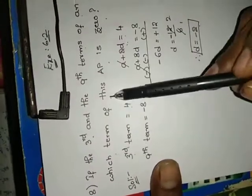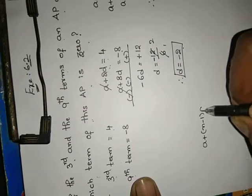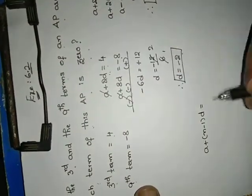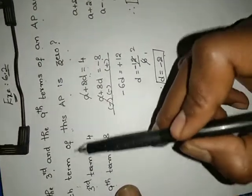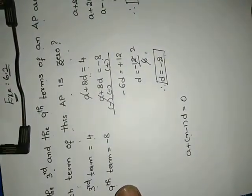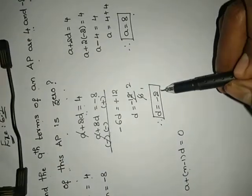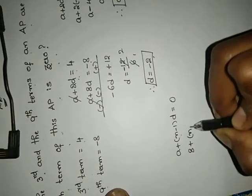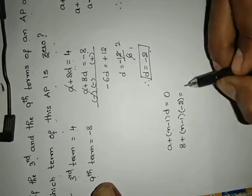We got A value and D value. What they ask: which term of this AP is 0? So A plus N minus 1 into D equals to 0. We have to find this nth term — that only is which term. N value we have to find. A equals to 8 and D equals to minus 2. 8 plus N minus 1 into minus 2 equals to 0.